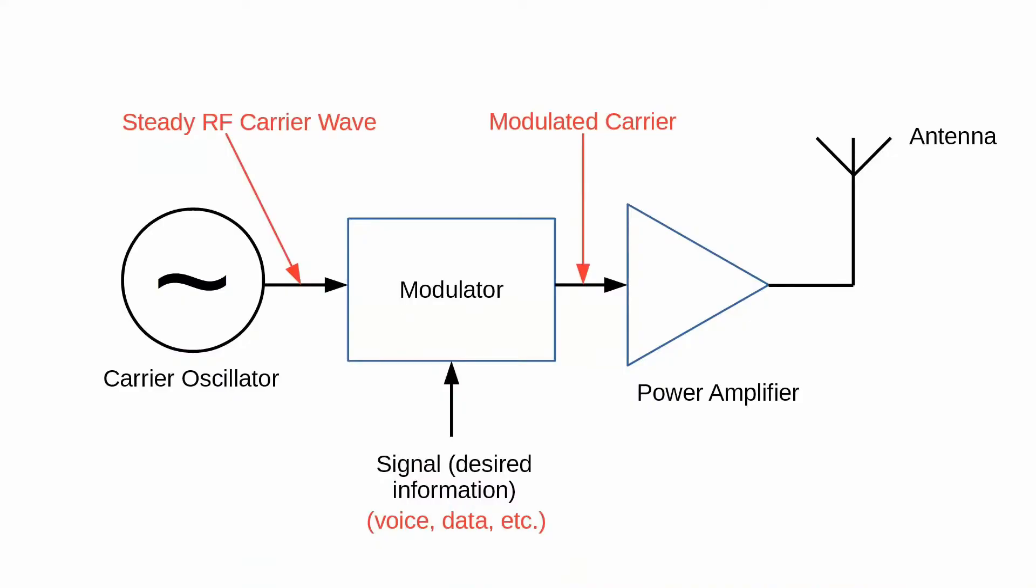An ordinary continuous radio wave will sound like dead air on a radio. Nothing. No signal. Just a blank. However, we can modulate a signal or information onto the radio wave in a variety of ways.